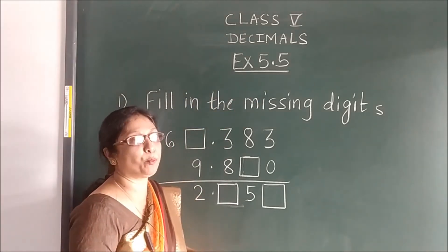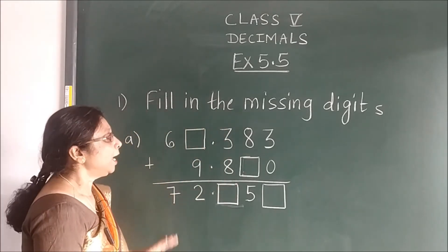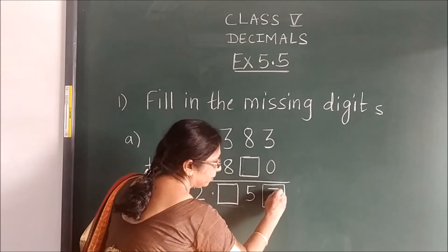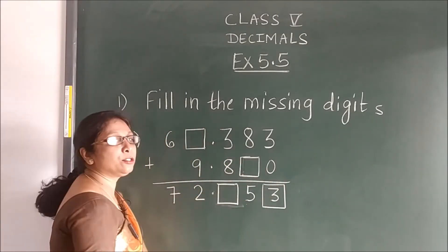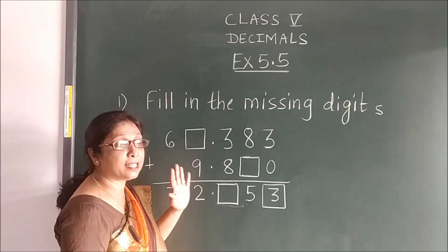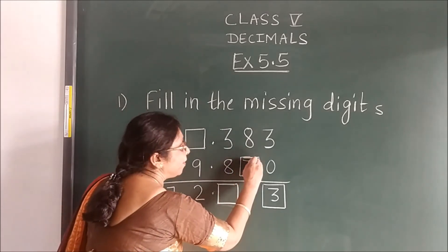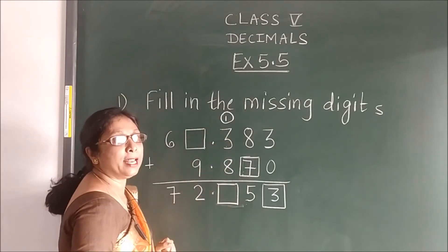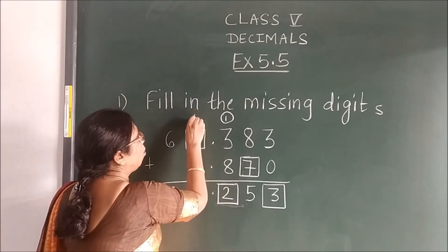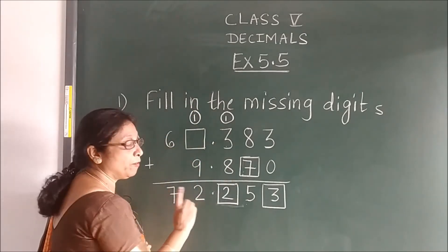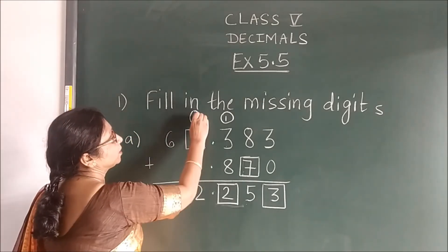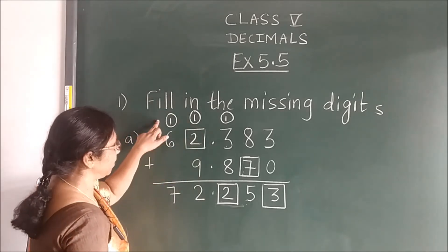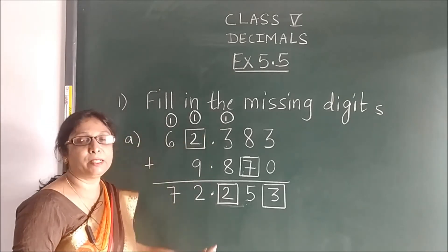Now question number 1 in exercise 5.5: fill in the blanks with the missing digit. You have to fill the gap. There is an addition. When you add 0, you get 3. Now 8 — what you will add? You got here 5 last. That means if you add 7 and 8, you will get 15. So you have 5 and you have 1 carry. Now 8 plus 3 is 11. 11 plus 1 is 12. So 2 here, 1 carry. Then 9 plus 1 is 10, but here we want 12, so 9 plus 1 is 10, plus 2 is 12 — write 2 and 1 carry. Then 6 plus 1 is 7. In this way, you have to fill the missing gap.